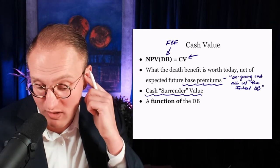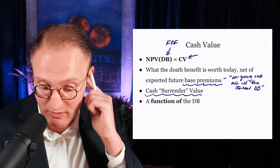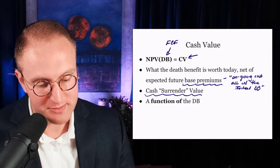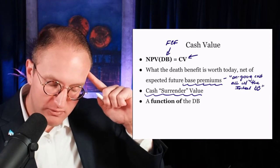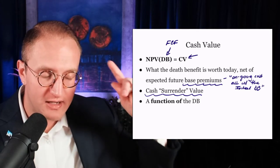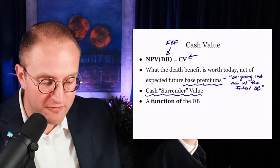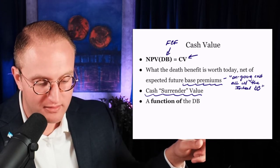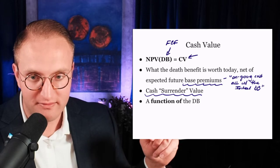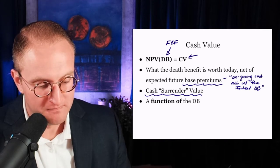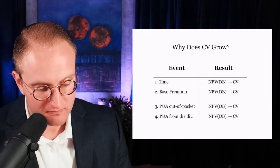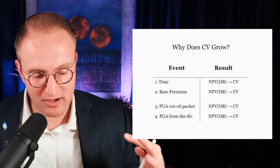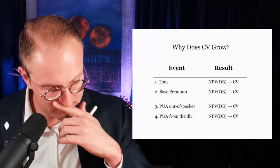Cash value is what the death benefit is worth today, net of those future base premiums — just like the $2,000 is what the $10,000 in a year from now, net of $500 per month, is worth today.